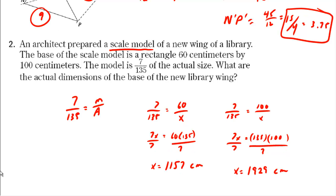So if I multiply that out, I would get 1929 centimeters. Now we could convert those to meters as well. There's 100 centimeters in a meter, so I can think of this as being 11.57 meters and this would be 19.29 meters. It didn't ask us for any particular units, but either one of those would work for the dimensions of our building.